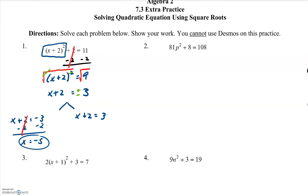Now I solve the other equation: x plus 2 equals 3. I subtract 2 from both sides, those 2's cancel, and x equals 3 minus 2, which is 1. So there are two solutions to equation number 1: x equals negative 5 and x equals 1.